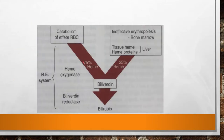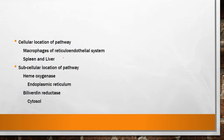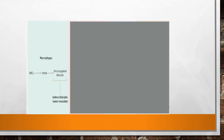This picture shows the pathway of heme breakdown. We can obtain 75 percent of heme from the catabolism of RBCs, and 25 percent from other sources such as liver tissue heme proteins — hemoglobin, myoglobin, cytochromes, catalases — and also from bone marrow during ineffective erythropoiesis. Heme is broken down by heme oxygenase into biliverdin, a green bile pigment, which is further broken down into bilirubin by biliverdin reductase. The cellular location is in the macrophages of the reticuloendothelial system — spleen and liver. The subcellular location in macrophages is the endoplasmic reticulum, which contains heme oxygenase, and the cytosol, which contains biliverdin reductase.